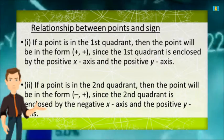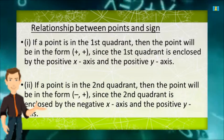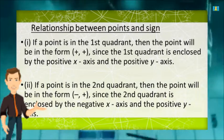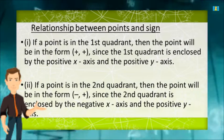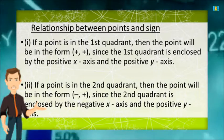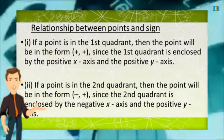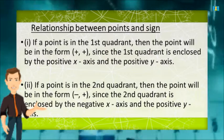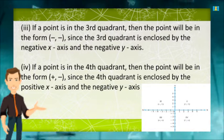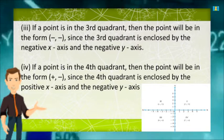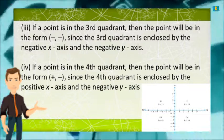Regarding the relationship between points and signs: if a point is in the first quadrant, then the point will be in the form (positive, positive), since the first quadrant is enclosed by the positive x-axis and the positive y-axis. If a point is in the second quadrant, then the point will be in the form (negative, positive), since the second quadrant is enclosed by the negative x-axis and the positive y-axis. If a point is in the third quadrant, then the point will be in the form (negative, negative), since the third quadrant is enclosed by the negative x-axis and the negative y-axis.